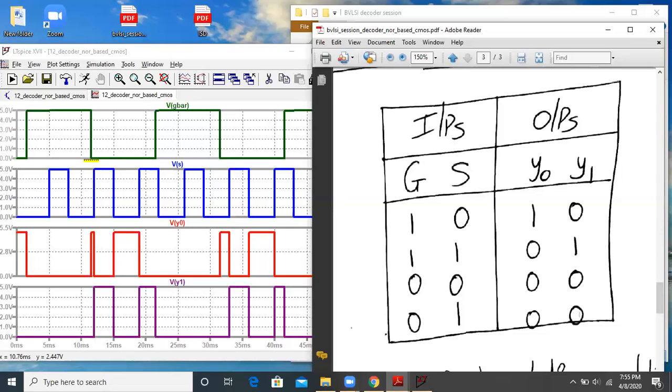And whenever my G is 1 and S is 0, again, Y0 will be 1. So in this duration, you have Y0 equal to 1. And whenever G is 0, G=0 means G-bar will be 1. So whenever that condition is there, irrespective of the value of S, my output will be 0. So indeed, my output Y0 and Y1 is 0 whenever I have G as 0 or G-bar as 1.